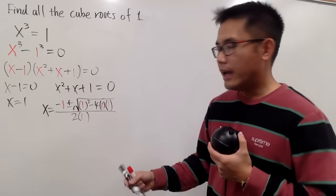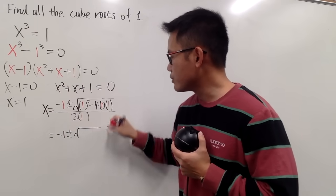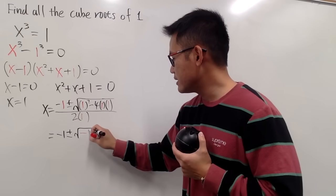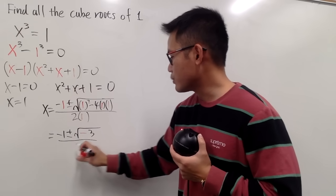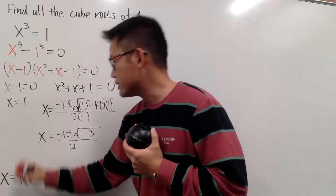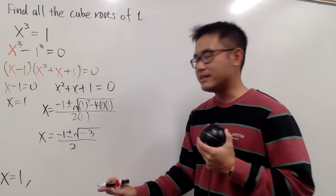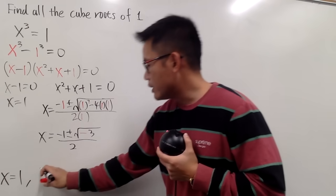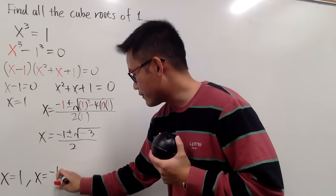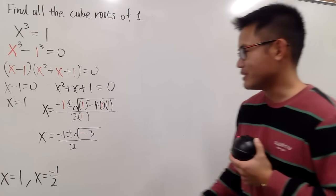We can simplify this a little bit. This is negative 1 plus or minus the square root of 1 minus 4, which is negative 3, over 2. So in the end, here are the three answers. The first real answer is x equals 1. The second answer is x equal to negative 1 half, written in the a plus bi form.